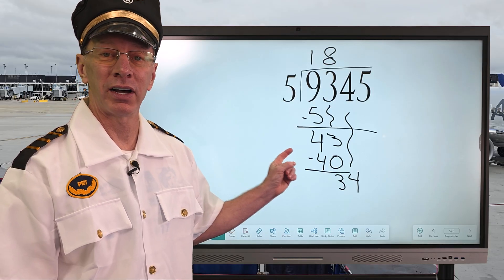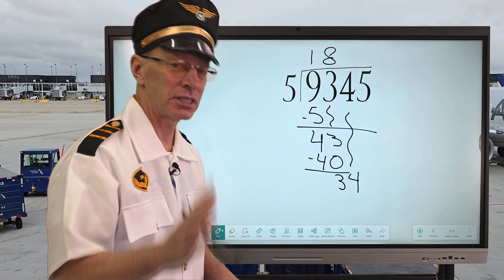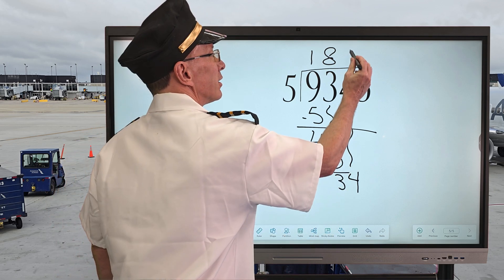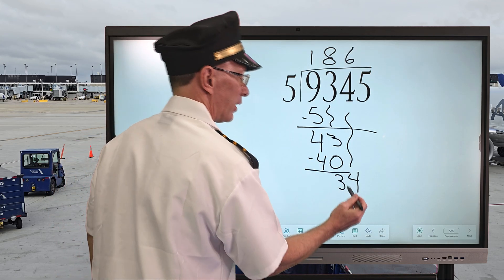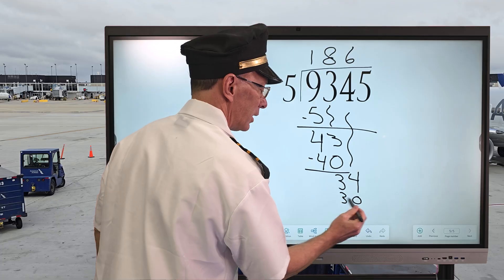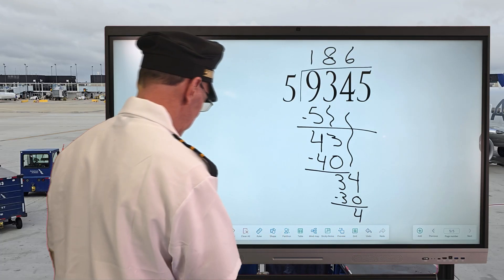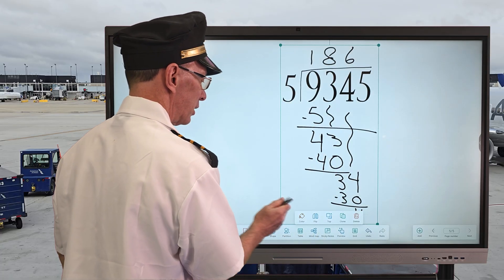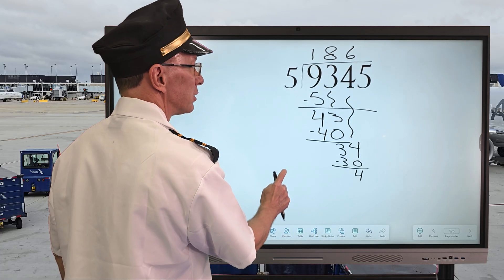Again, how many times can I put 5 into 34? 6. 6 times 5 equals 30. So I go ahead and put 6 right here. 6 times 5 equals 30. Subtract, and that gives me 4. And I still have one more number to bring down. I'm just going to make this problem a little bit smaller here.